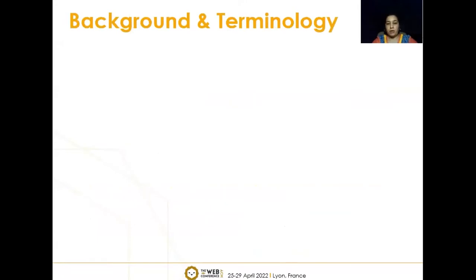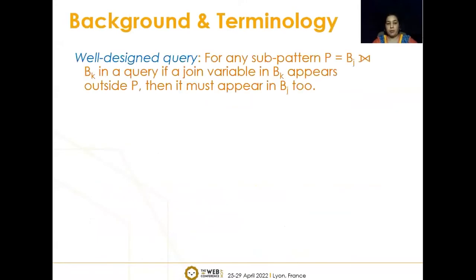Let us go over some background and terminology used in this presentation as well as in the paper. In a well-designed query, for any sub-pattern P equal to BJ left outer join BK in the query, if a join variable in BK appears outside P, then it must appear in BJ too. Here BJ and BK are basic graph patterns, but this property applies transitively to all sub-patterns in the query.